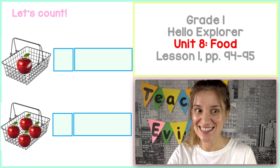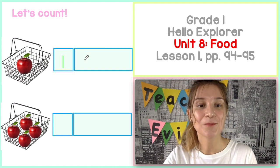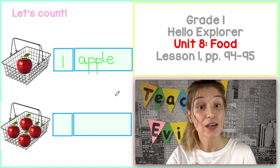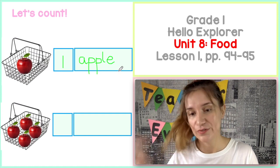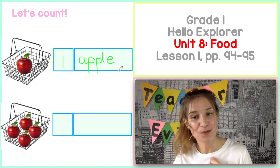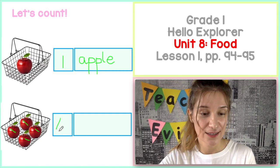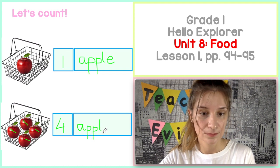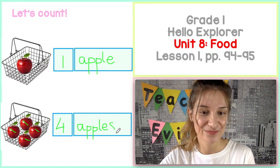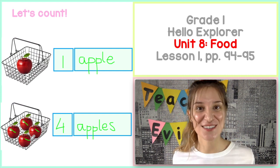What's that in the basket? Apple. So let's write: one apple. Do we write S? Potrzeba dopisać S czy nie? No. Why? Because it's one. Bo to jest jedno jabłko. Przy jednej rzeczy nie dopisujemy S. One, two, three, four — four apples. Piszemy S czy nie? Piszemy, bo są cztery jabłka. Jak jest więcej niż jedno, to piszemy S. Four apples. Now you say it.